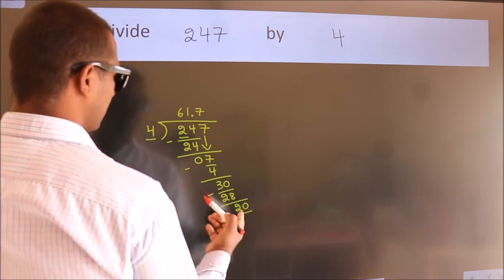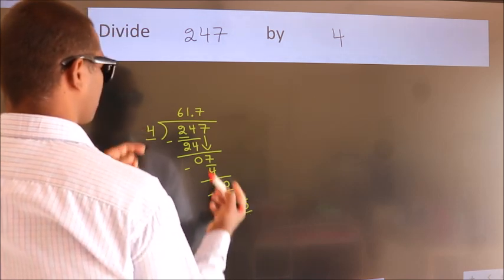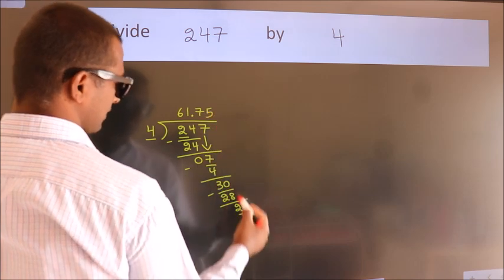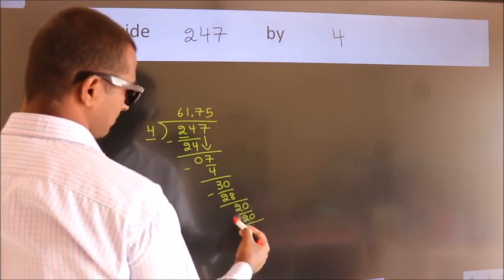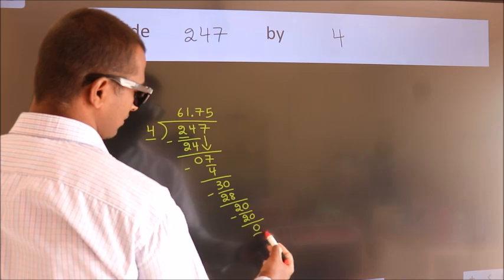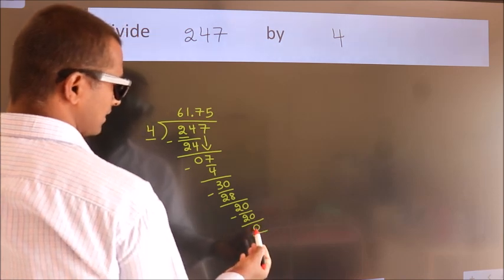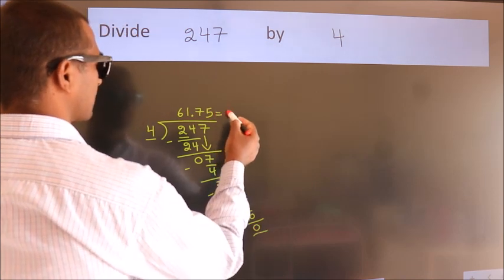When do we get 20? In the fourth table. Four fives equals 20. Now we subtract. We get 0. We got remainder 0. So this is our quotient.